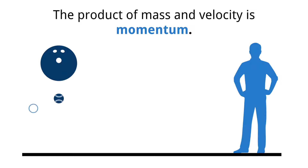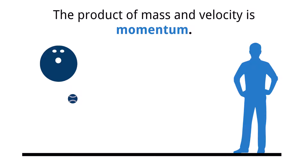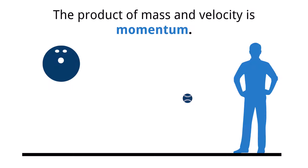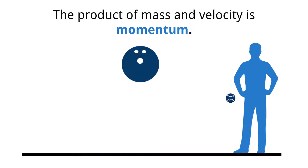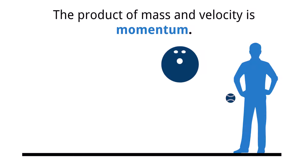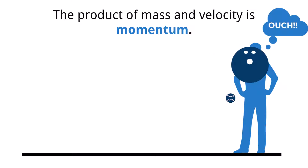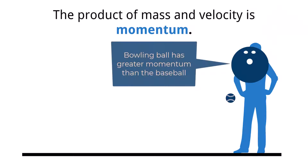Consider the situation of trying to catch a baseball compared to a bowling ball moving at the same velocity. Because the mass of the baseball is much less than the bowling ball, it is much easier to slow down and catch than it would be a bowling ball moving at the same velocity. In this example, we say the bowling ball has greater momentum than the baseball because its mass is greater.